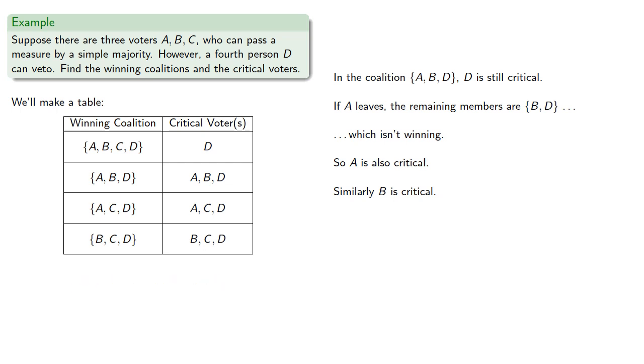And now we count. A, B, and C are each critical in two coalitions. Meanwhile D is critical in four coalitions. So in some sense D has twice the power of A, B, or C.